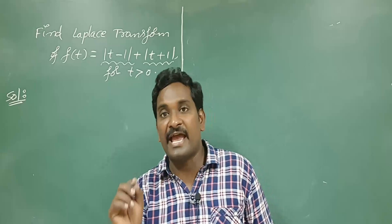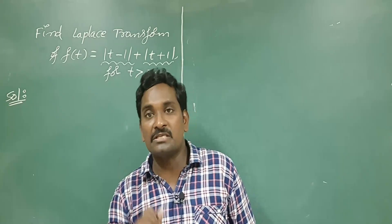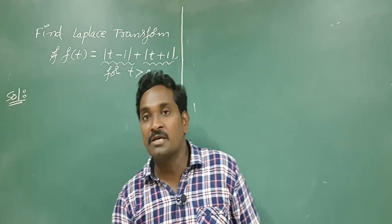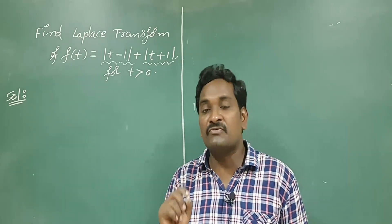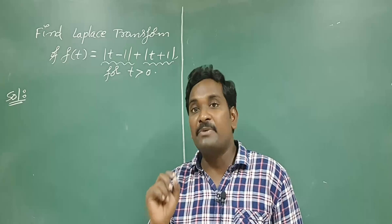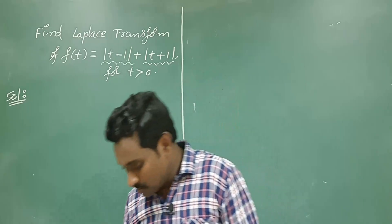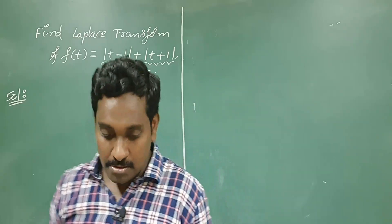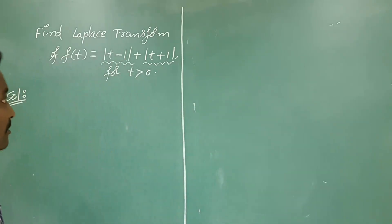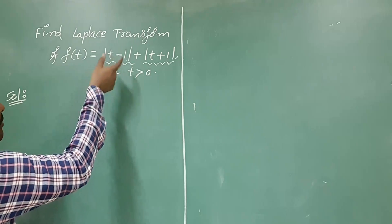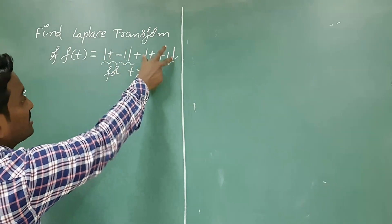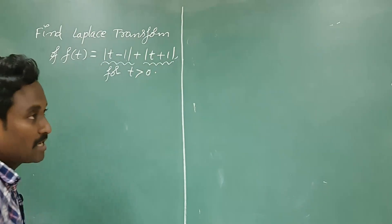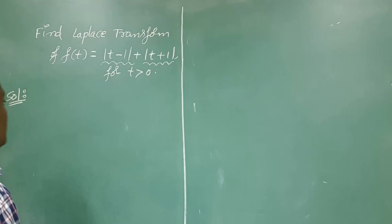Whenever the given function f(t) has modulus of some terms, it is said to be a discontinuous function — it may be a piecewise continuous function. So first of all we have to see what is the value of modulus of t minus 1 and what is the value of modulus of t plus 1.